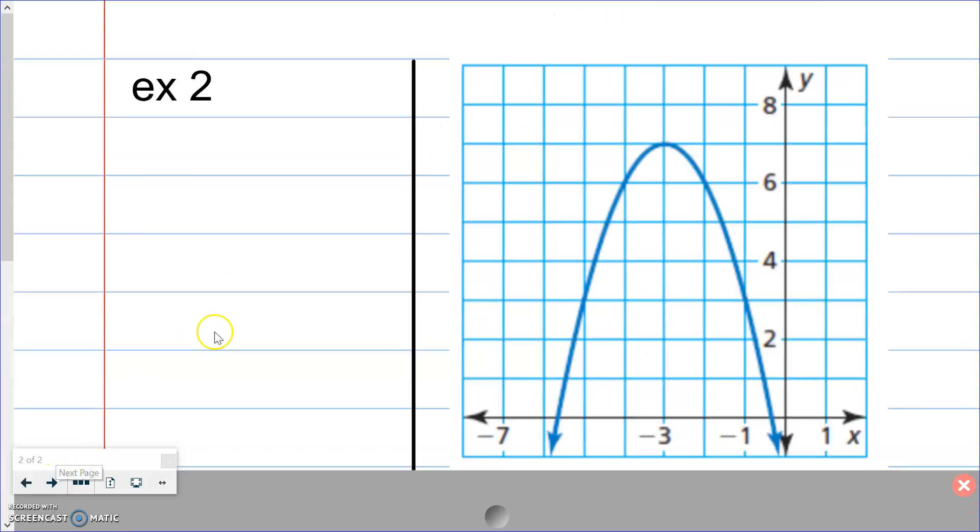Let's look at another example. This time our graph is going down. It still continues to go left and right forever, however it stops going up right here at a vertex. It goes below it but it does not go above it.